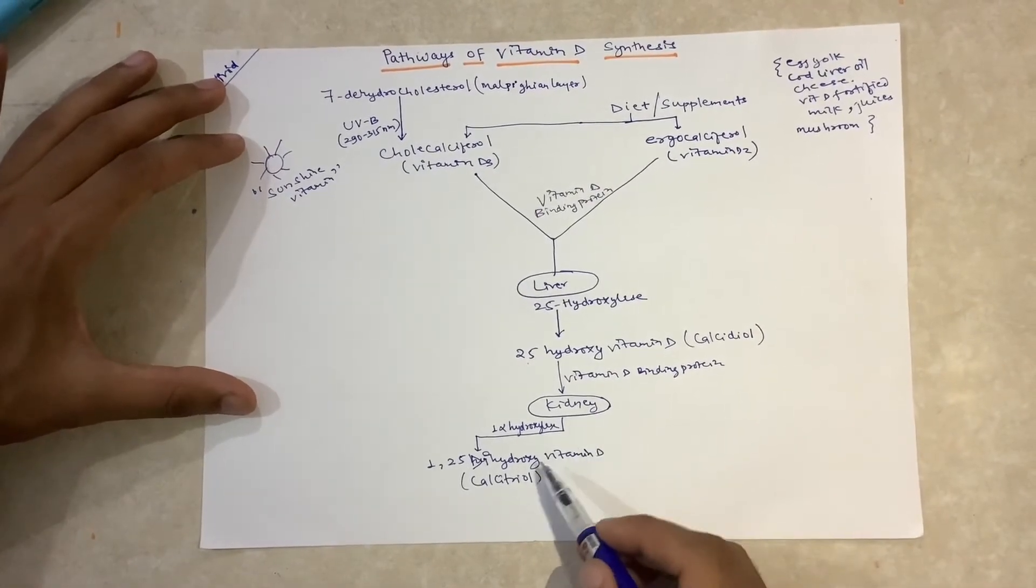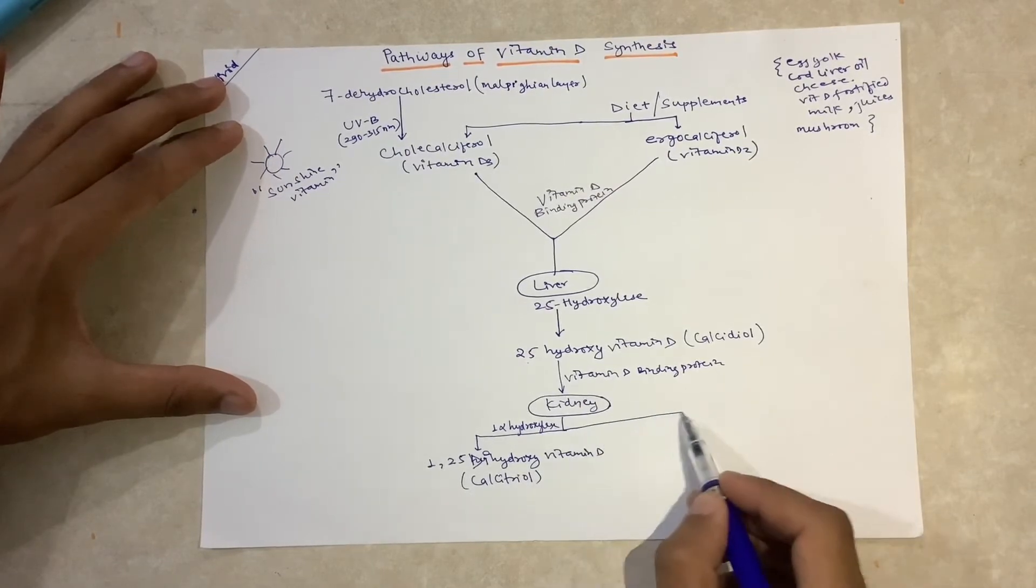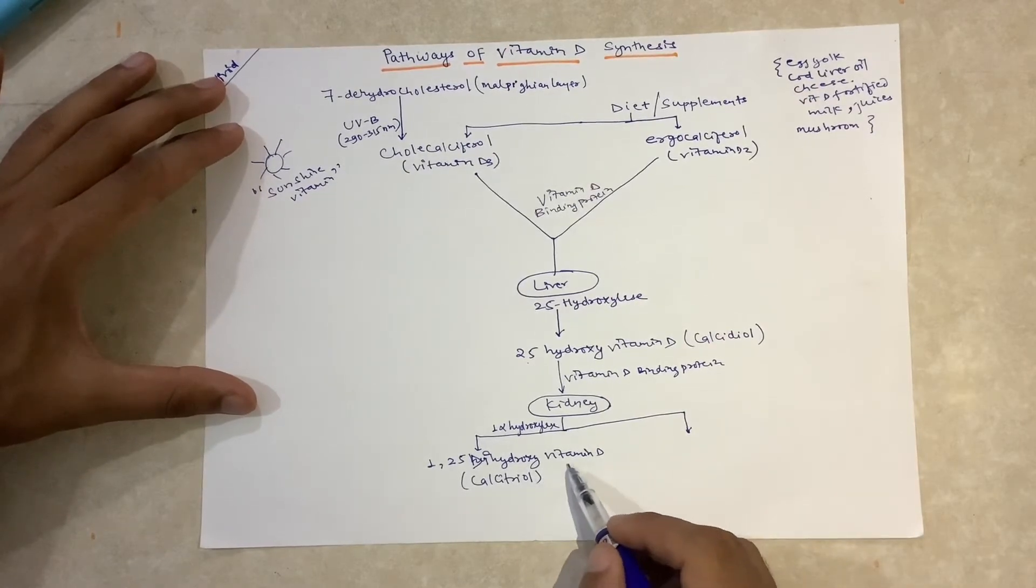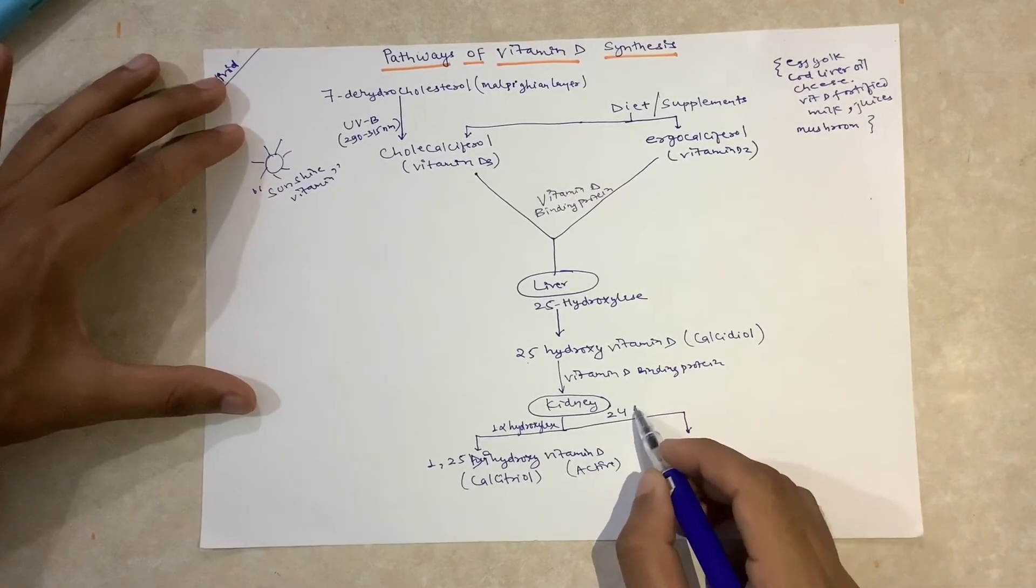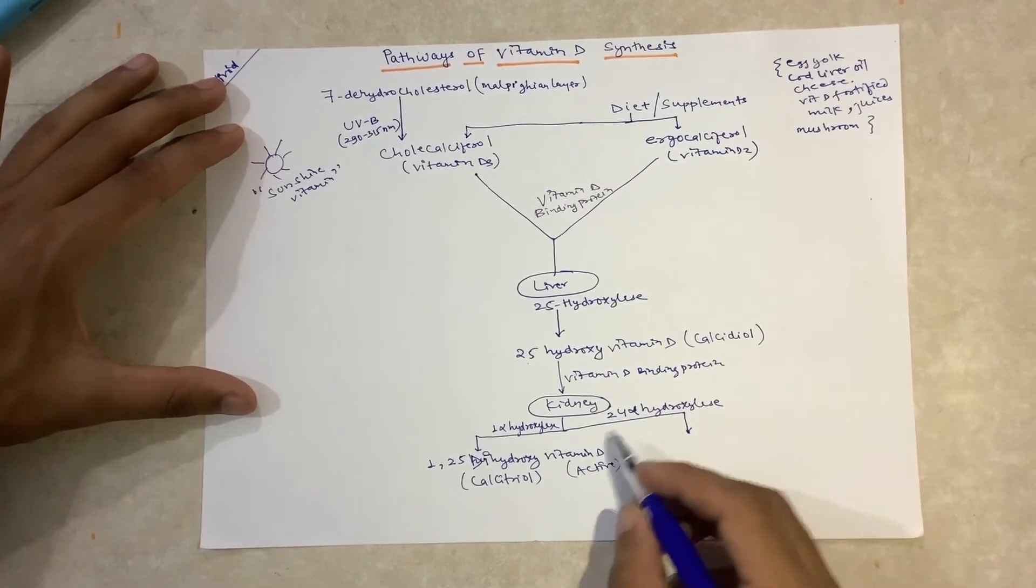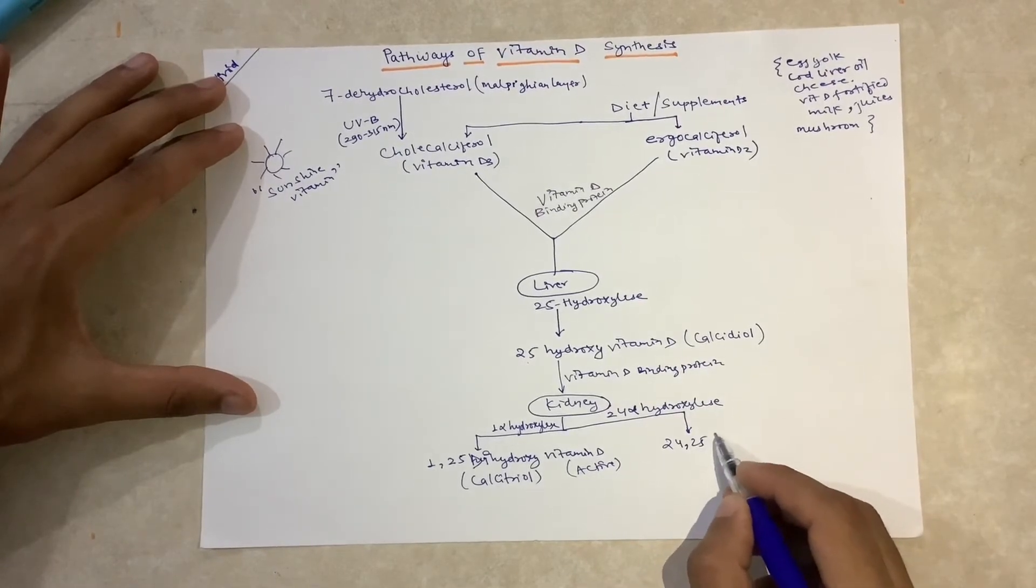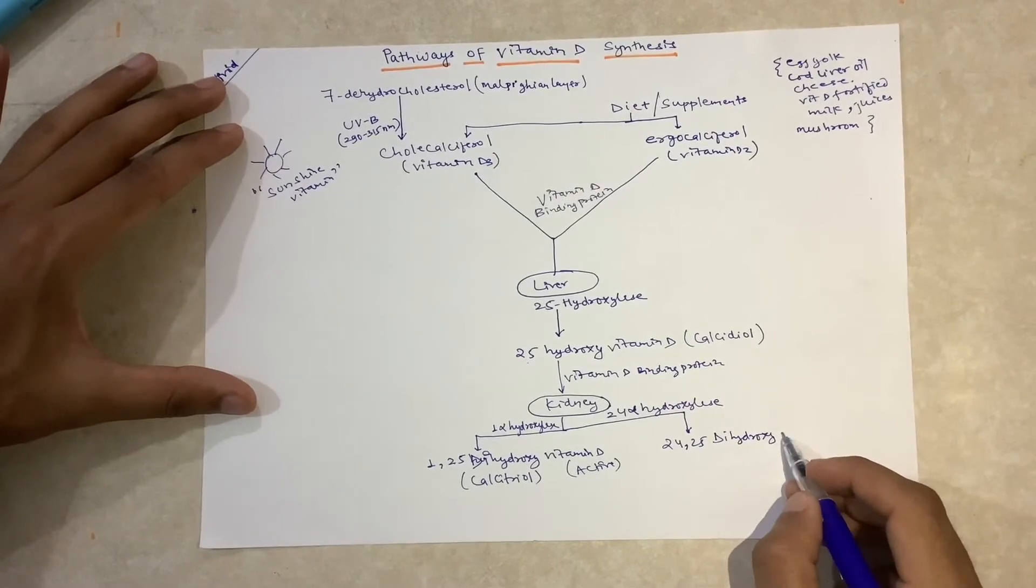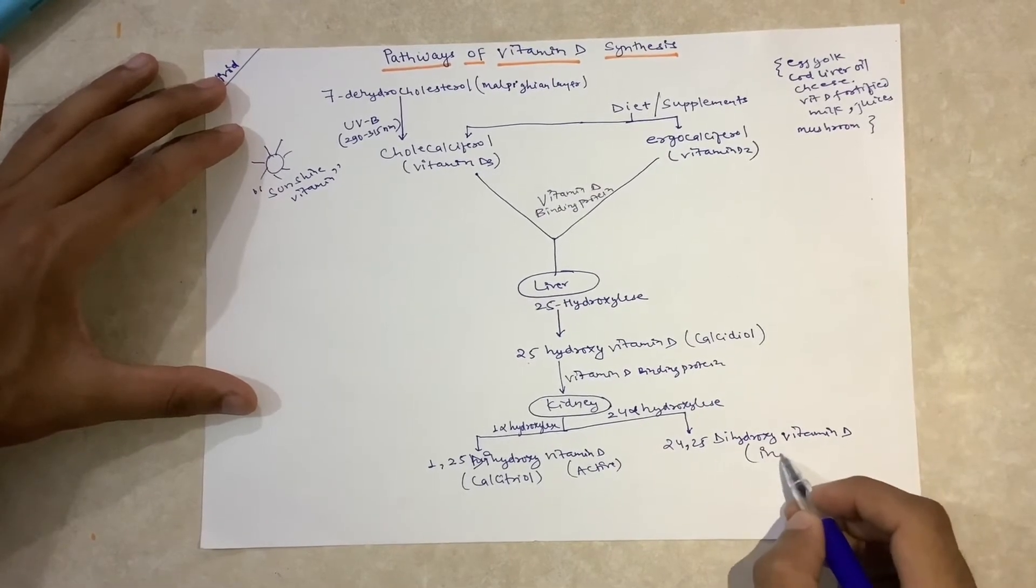If our blood has enough calcium, or if there is a decrease in parathyroid hormone, then there is no requirement for formation of the active form of vitamin D. In that case, the kidney uses the enzyme 24-alpha-hydroxylase to convert 25-hydroxy vitamin D to 24,25-dihydroxy vitamin D, which is the inactive form.